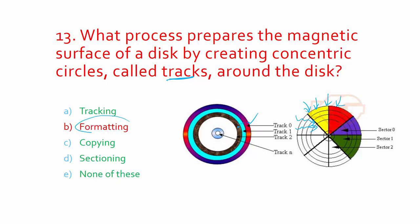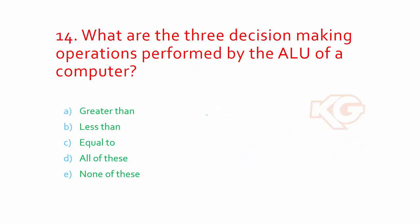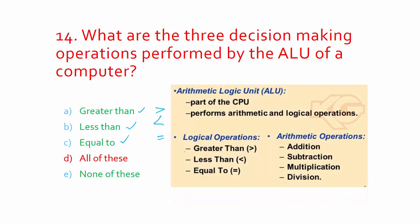What are the three decision-making operations performed by the ALU of a computer? ALU stands for arithmetic logic unit. So what does it do? Does it do greater than, less than, or equal to, or all of this? It does more than this, so the option should be D. It can be greater than, less than, or equal to.